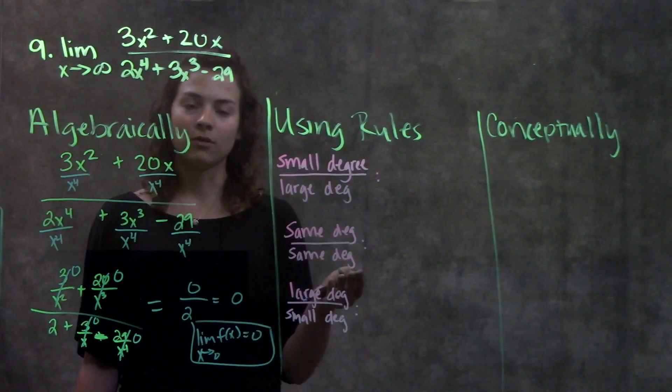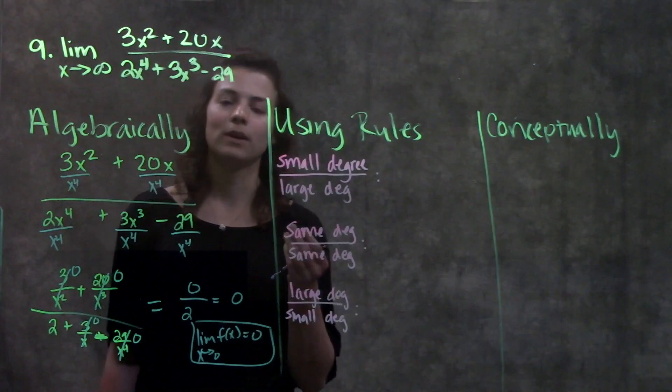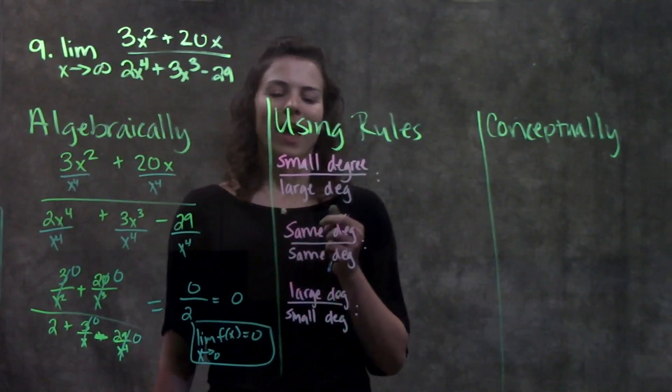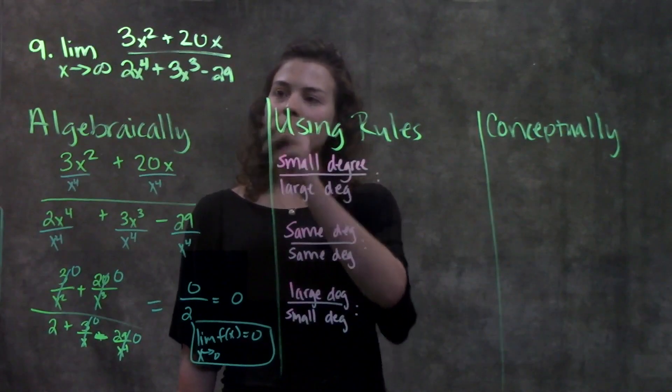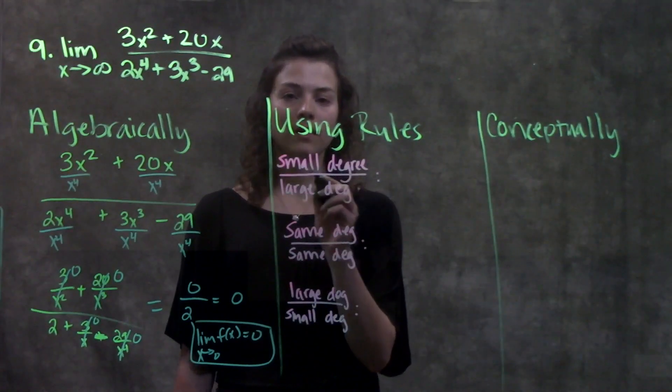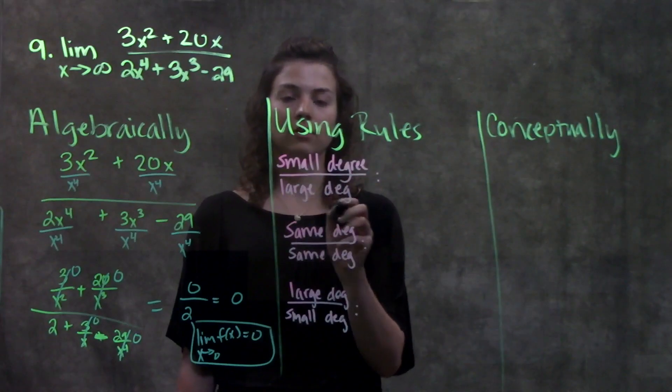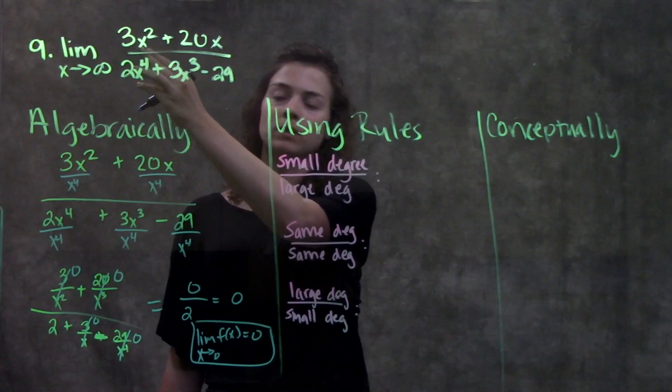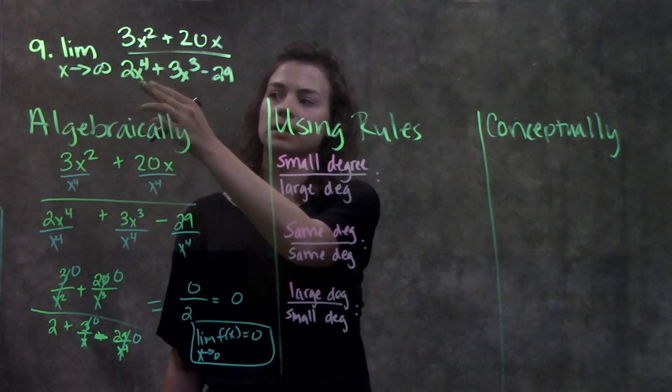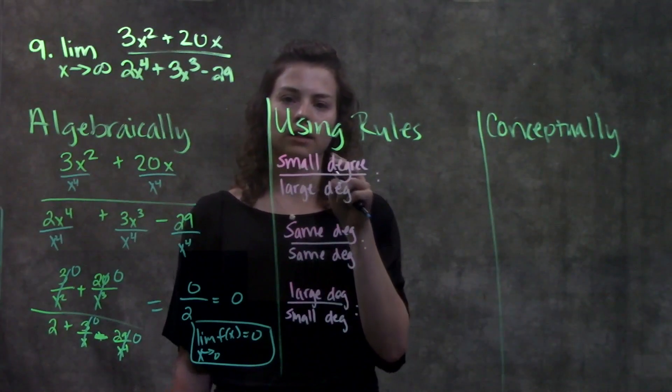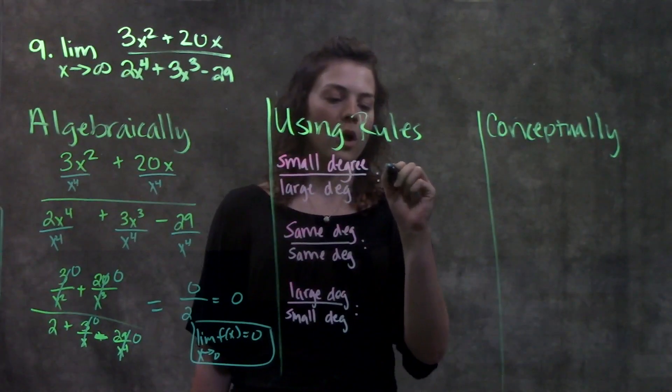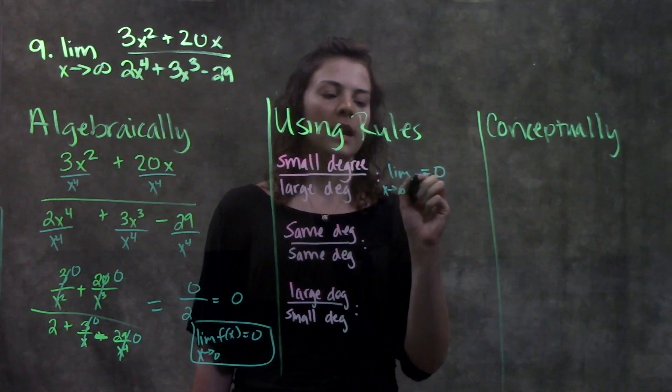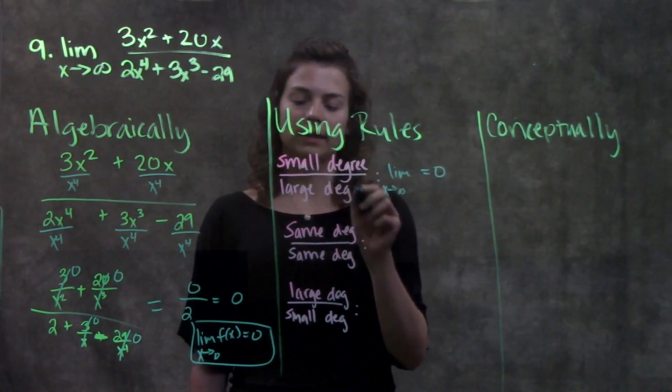But you can also go through this problem using rules. If you're one who likes to memorize rules, this is the way for you. Using rules, if I have a fraction like this, and I have a smaller degree in the numerator than I do in the denominator, like I did here, my leading term here was x squared, but my leading term in the denominator was x to the fourth. Small on top, large on bottom. This limit will always equal zero. Limit as x approaches infinity is always equal to zero for this type of fraction.